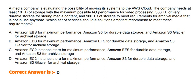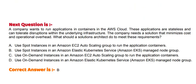and 900 TB of storage to meet requirements for archival media that is not in use anymore. Which set of services should a solutions architect recommend? Option A: Amazon EBS for maximum performance, Amazon S3 for durable data storage, and S3 Glacier for archival storage. Option B: Amazon EBS for maximum performance, Amazon EBS for durable data storage, and Amazon S3 Glacier for archival storage. Option C: Amazon EC2 instance store for maximum performance, Amazon EFS for durable data storage, and Amazon S3 Glacier for archival storage. The correct answer is Option D.